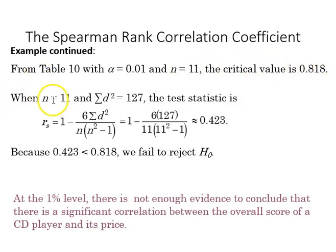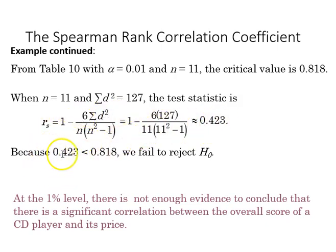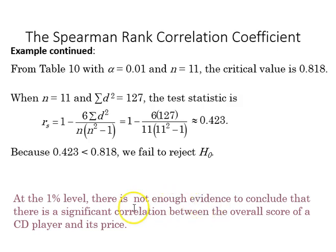When n equals 11 and the sum of d squared is 127, the test statistic for RS is going to wind up being 0.423. That is less than 0.818, so we fail to reject the null. In the context of the original claim, that means at the 1% level there's not enough evidence to conclude that there's a significant correlation between the overall score of a CD player and its price.